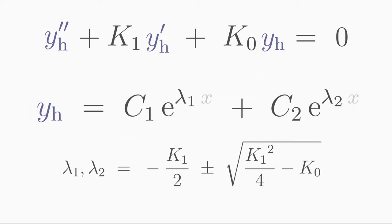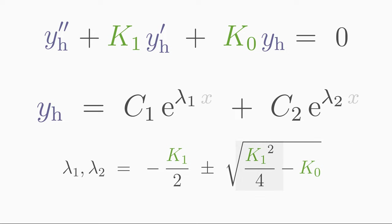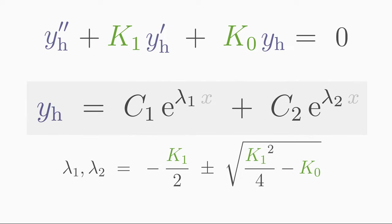Depending on the values of the coefficients k1 and k0, the solutions may show different behavior. If k0 is greater than k1 squared over 4, then you are taking the square root of a negative number. In this case, you get a solution that describes oscillations. This will be shown in an example.